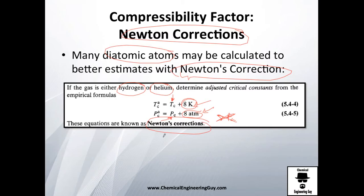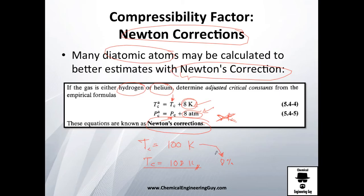These equations are known as the Newton corrections and are very important. For example, if you have a critical point at 100 Kelvin and it were a diatomic molecule, you would have to correct that and you would get 108 Kelvin — that's about 8% error if you don't do the correction. I personally don't use it that much, but if you are speaking about theoretical concepts, this is a very important theoretical concept.